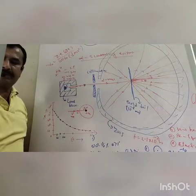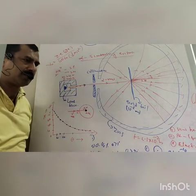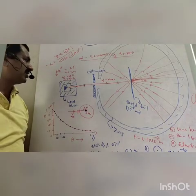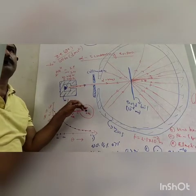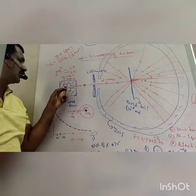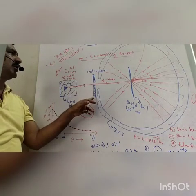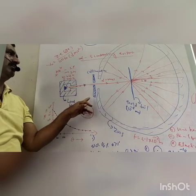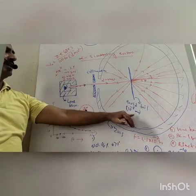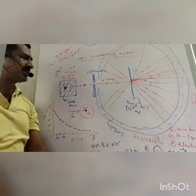Alpha scattering experiment. This experiment was constructed by Geiger and Marsden, his colleagues. In this experiment, this one is the lead block. Inside the lead block is the source of the alpha particles. This one is the lead slit. And this one is the thin gold foil — its thickness is about 10 raised to minus 8 meter, and its actual thickness is 2.1 into 10 raised to minus 7 meter.